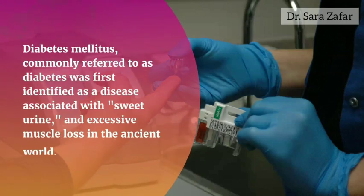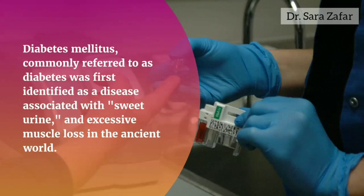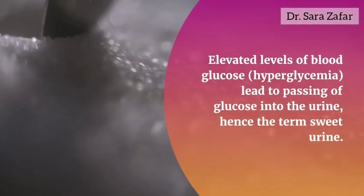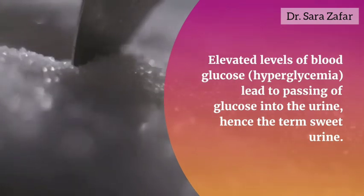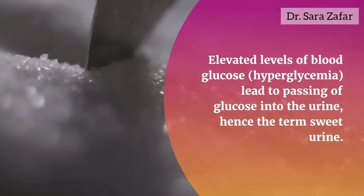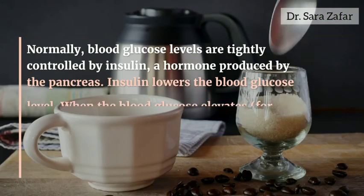Diabetes mellitus, commonly known as diabetes, was first identified as a disease associated with sweet urine and excessive muscle loss in the ancient world. Elevated levels of blood glucose — hyperglycemia — lead to the passing of glucose into the urine.